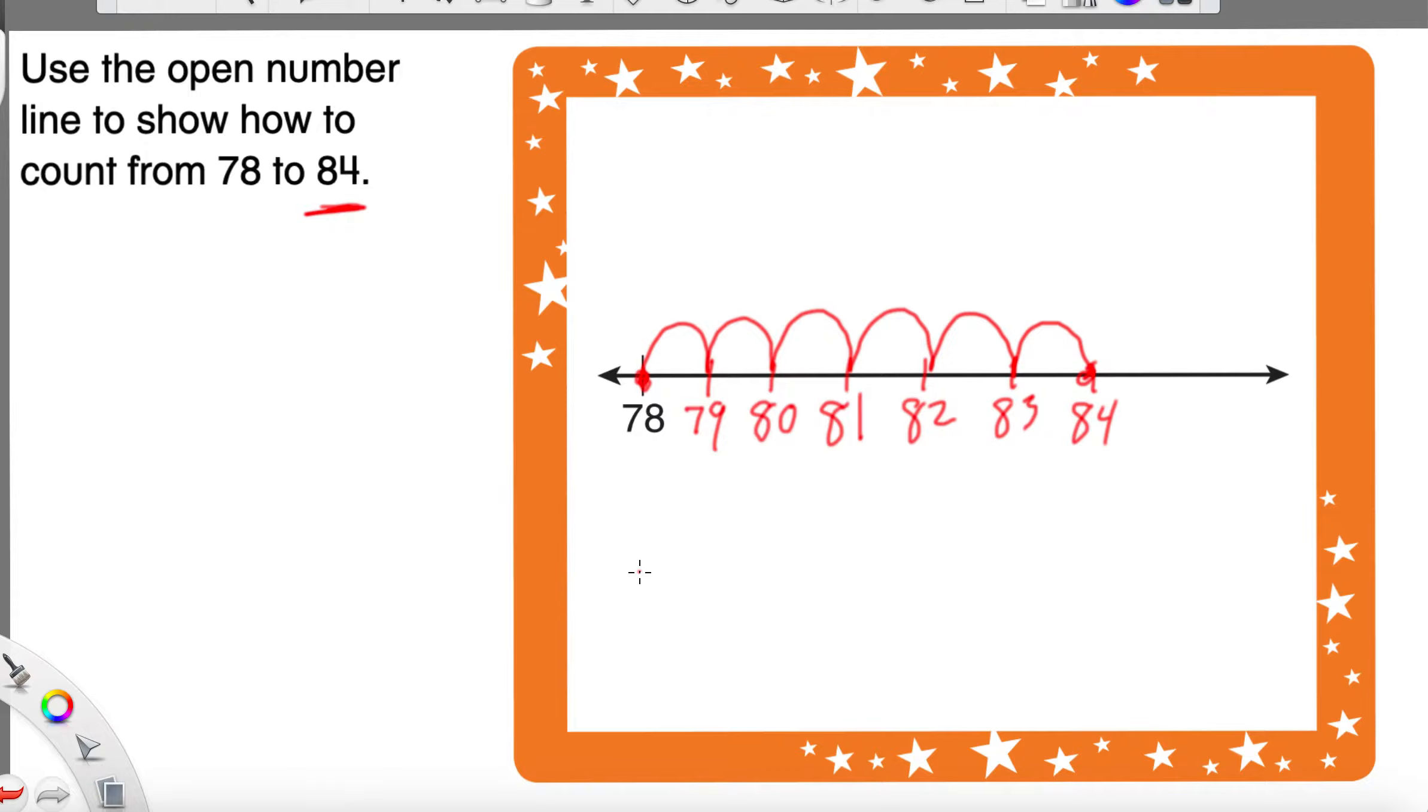So if we wanted to be really fancy and write an addition sentence, we could say 78 plus how many jumps did we make? We made 6 jumps. So 78 plus 6, well, that gives us 84. So this is going to be really helpful for when we start doing really big addition problems like this.